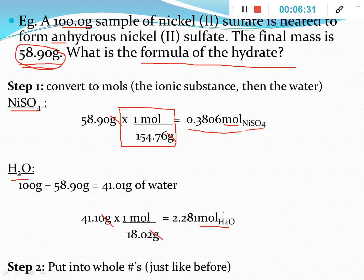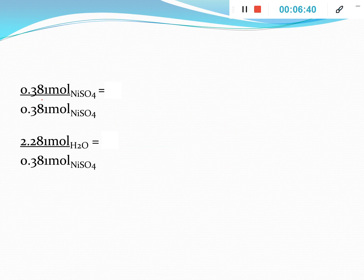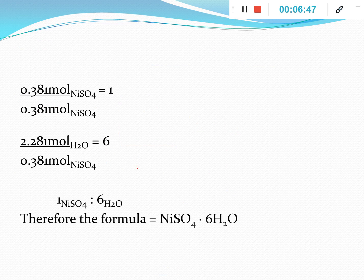We need whole numbers since we're talking about actual whole molecules. Divide both values by the smallest number, 0.3806 moles, and we get 1 mole of nickel(II) sulfate for every 6 moles of water. We can then write the hydrate's formula: NiSO₄·6H₂O — one nickel(II) sulfate for every 6 waters.